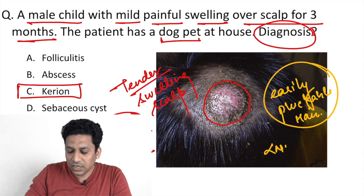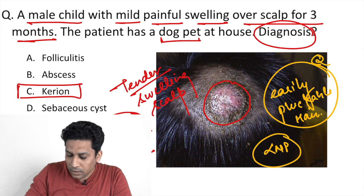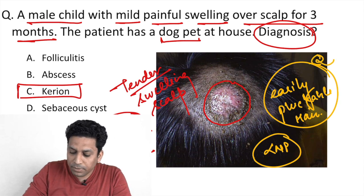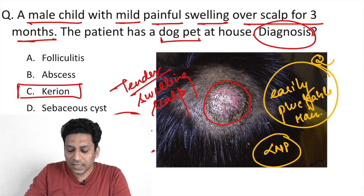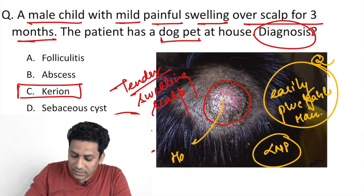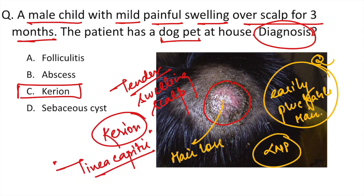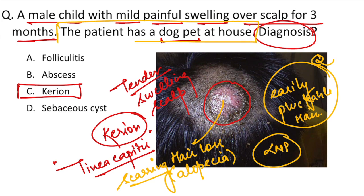There is also associated regional lymphadenopathy. The key point here is easily pluckable hair follicles, which is why you can see hair loss as well — that is alopecia. This alopecia is of the scarring type, so when this lesion heals, the patient might develop scarring alopecia.